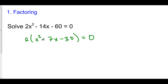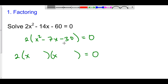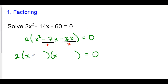Now, x squared minus 7x minus 30 — we want to factor this down to two binomials. We're going to have x times x, giving us x squared. But now we want to find two numbers that multiply to negative 30 and add to negative 7.